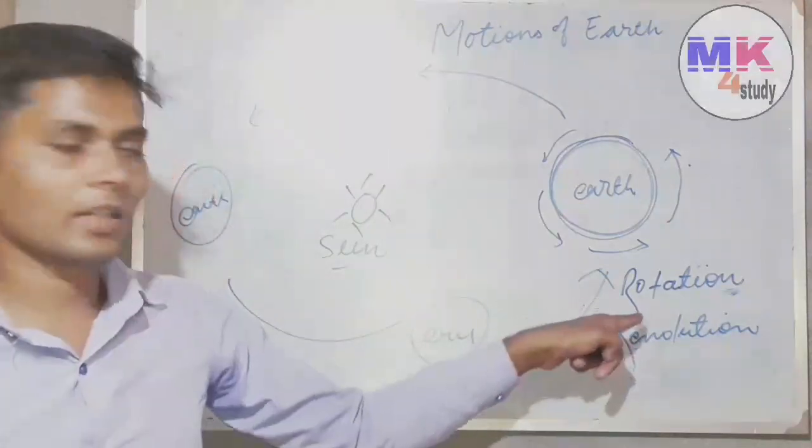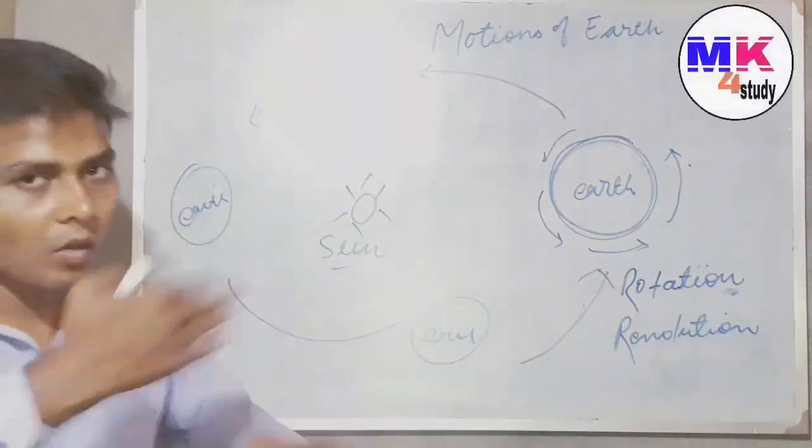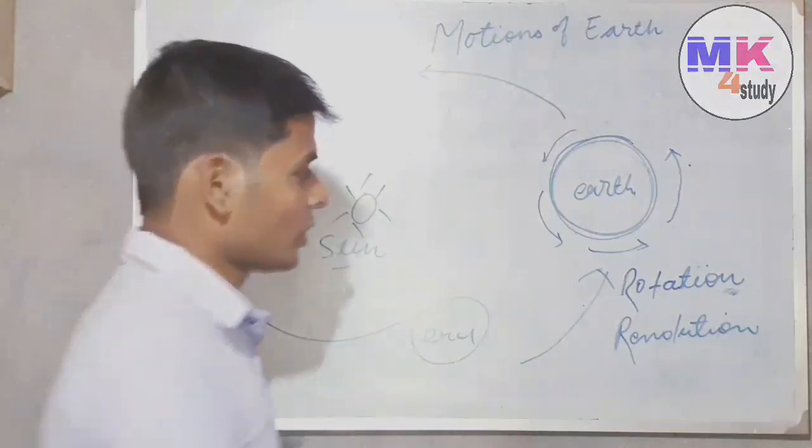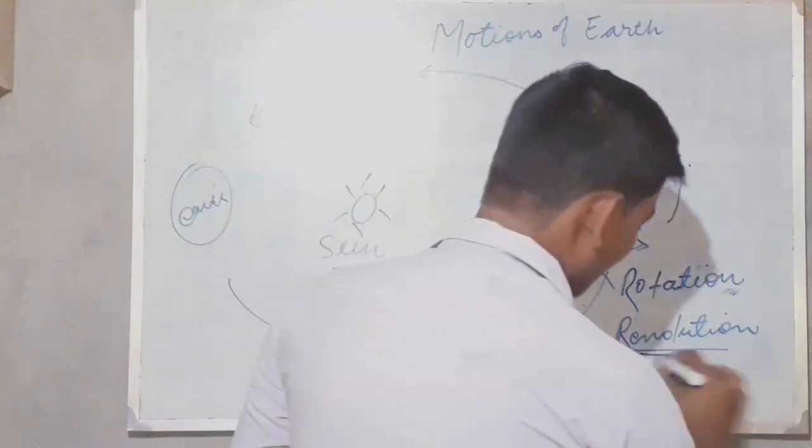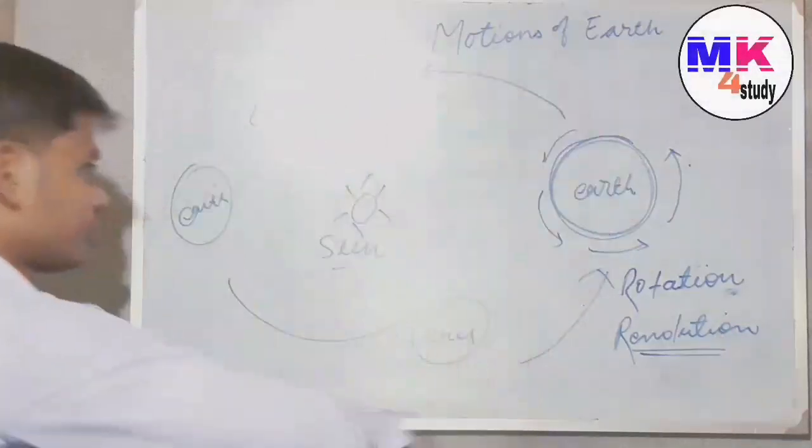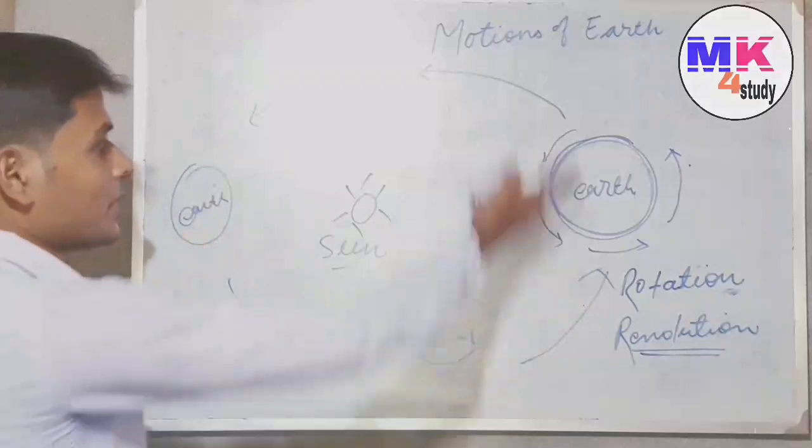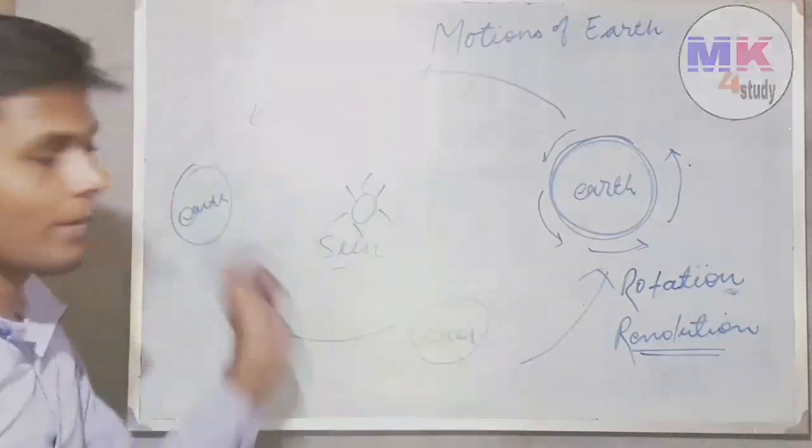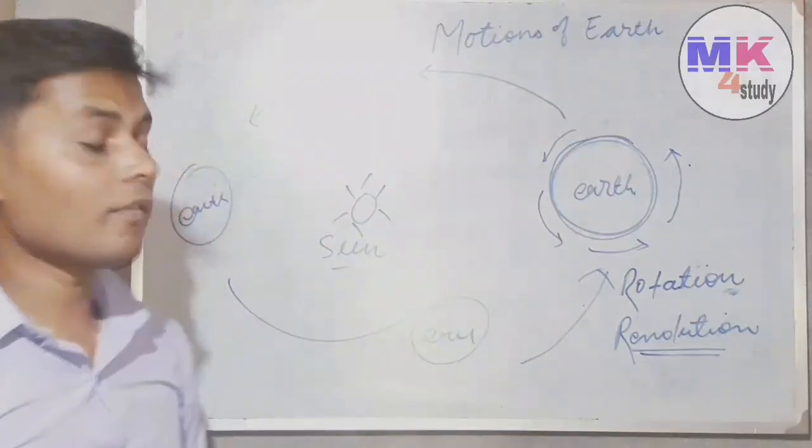Okay, now come to the revolution. Revolution means when earth moves around the sun. When earth moves around the sun, this movement is called revolution - revolution of earth or revolution of any planet in solar system.